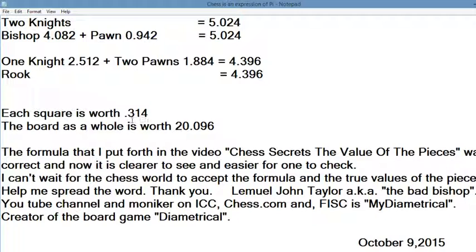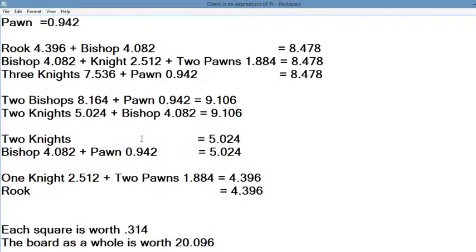So each square, like I said, is worth 0.314. And originally when I came up with the formula, I came up with 0.33. I was still basing everything off a pawn being one, and the closest I can get to a pawn to still be one was 0.33, which made the pawn 0.99. But as we see, the pawn is worth 0.942.